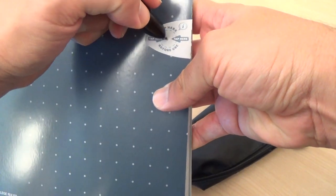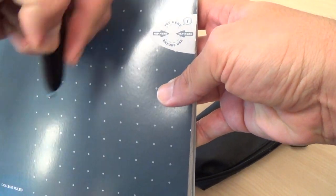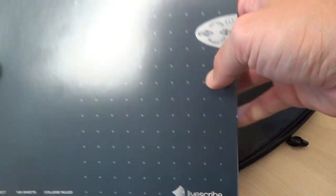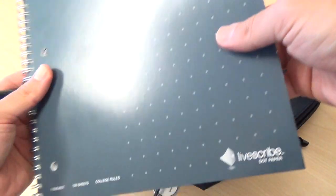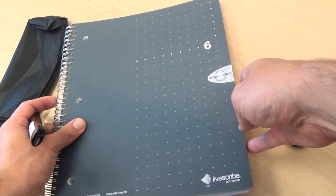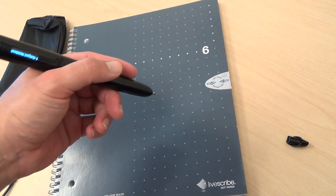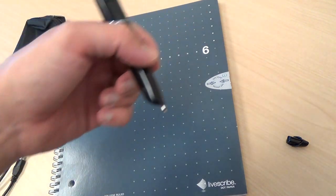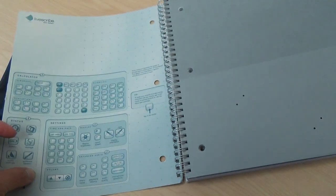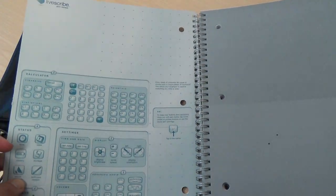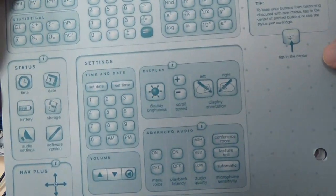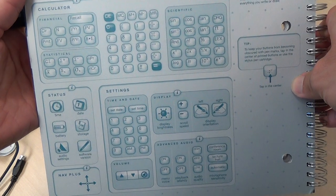So if I tap here, it gets the pen synced up with this notebook here. And we don't need to do that again unless we had an additional notebook. So it's usually just once per pen and notebook. I'm going to open it up to the first page here and we'll see the standard buttons and options and things on the inside cover of the notebook.